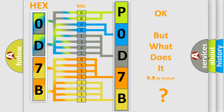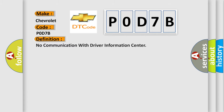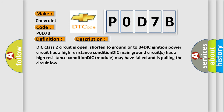We now know how the diagnostic tool translates received information into a more comprehensible format. The number itself does not make sense unless we can assign meaning to what it expresses. For Chevrolet, the diagnostic trouble code P0D7B is specifically defined as: No communication with driver information center. The DIC class 2 circuit is open, shorted to ground, or to B+. The DIC ignition power circuit has a high resistance condition. The DIC main ground circuit has a high resistance condition. The DIC module may have failed and is pulling the circuit low.